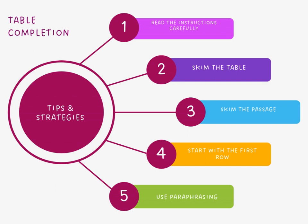Once you are done skimming the table, skim the passage as well — skim through the passage without worrying about filling the table just yet. Look for keywords and phrases that correspond to the information you need. While you skim, scan for specific information — keywords, numbers, dates, names, or specific details. Then begin filling the table with information from the passage, starting with the first row and moving systematically through the table. Use the keywords and information you identified to find the relevant details.